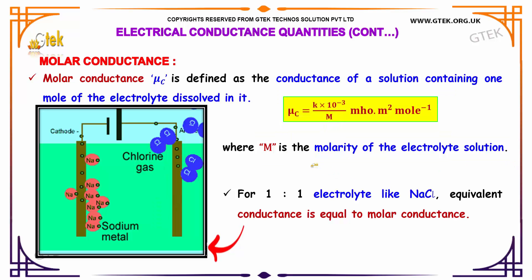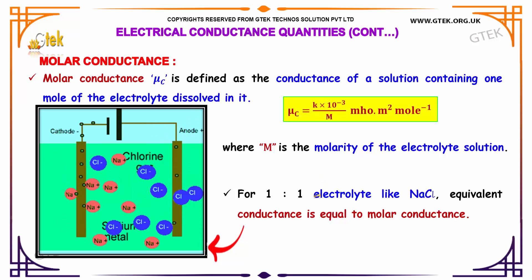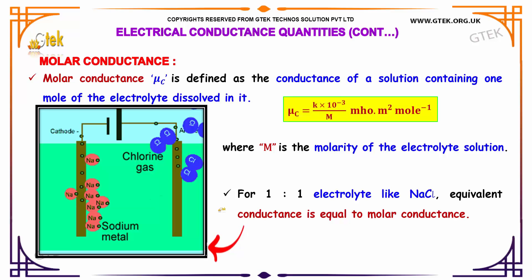For a 1:1 electrolyte like sodium chloride (NaCl), which contains Na⁺ ions and Cl⁻ ions, the equivalent conductance is equal to the molar conductance.